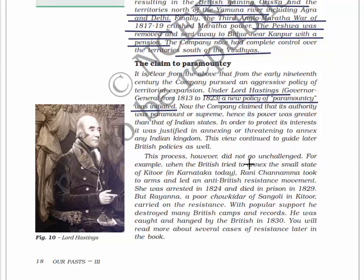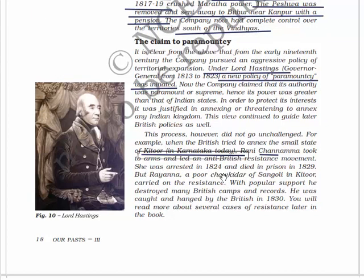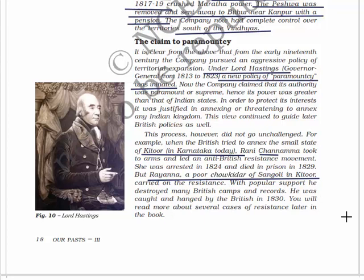This process did not go unchallenged. When the British tried to annex the small state of Kittur in Karnataka, Rani Channamma took up arms and led an anti-British resistance movement. She was arrested in 1824 and died in prison in 1829. After Rani Channamma, a poor chokidar of Sangoli in Kittur, Rayanna, carried on the resistance and with popular support destroyed many British camps and records. He was caught and hanged by the British in 1830.